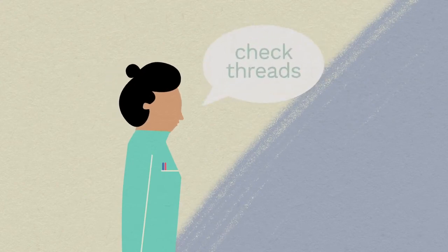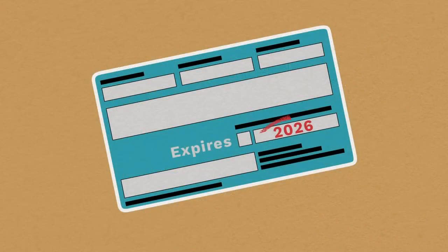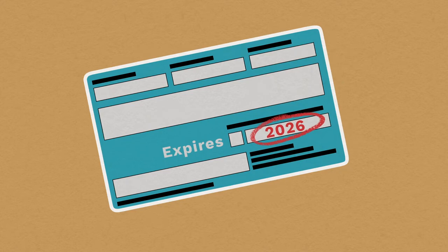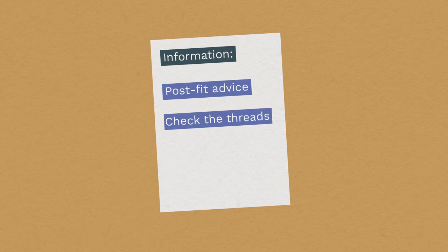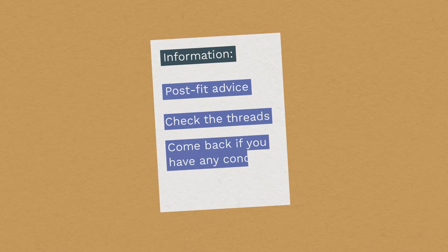We'll explain how to check the threads that show the device is in the correct position. You will need to check this once a month, and we'll give you a card with the expiry date written on it. Keep this safe. We'll give you an information sheet to remind you about post-fit advice, and how to check for problems. Most women don't need a follow-up appointment, but you must come back if you're concerned about anything.